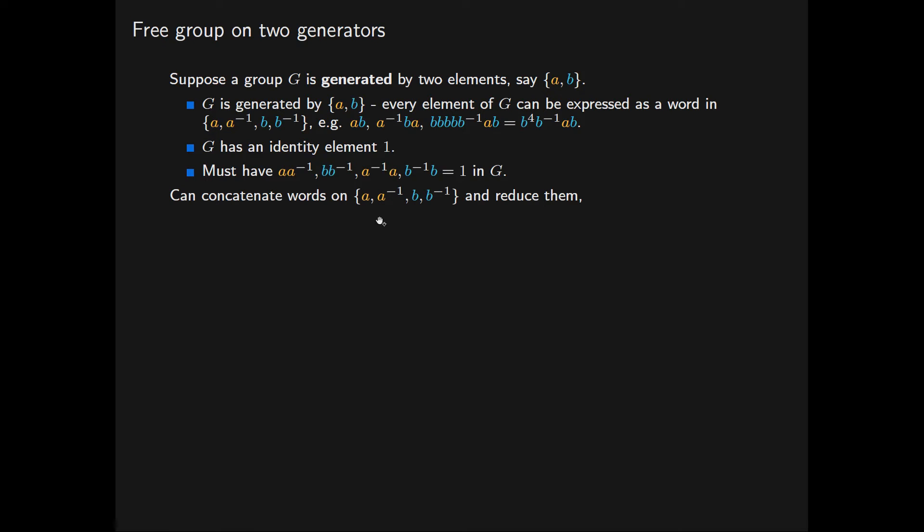Now we can concatenate words on these elements and reduce them. So concatenation means, for instance, if we have the following words u and v, we put them together—that's the concatenation part. And the reduction part means that we are replacing instances of a a inverse, b b inverse, a inverse a, and b inverse b with the identity element. So in this example we have these words u and v. This is their concatenation.